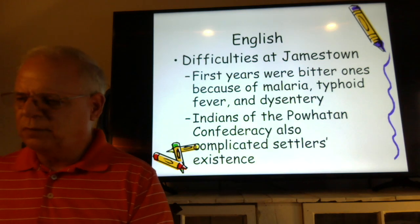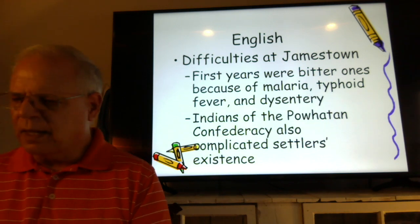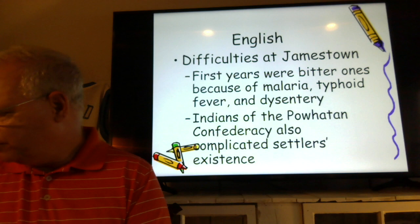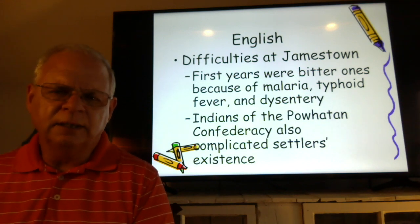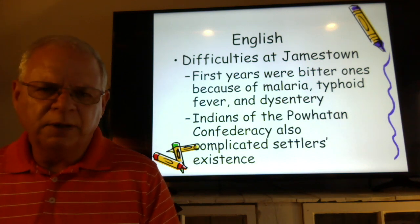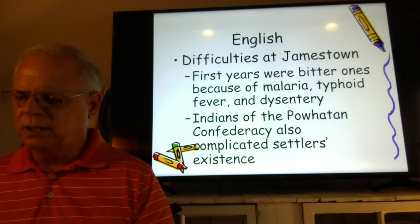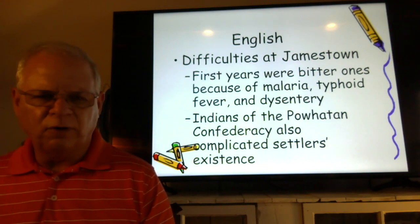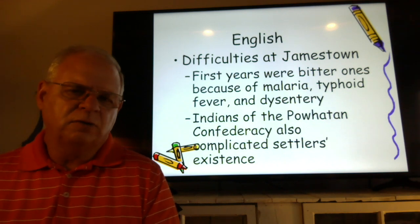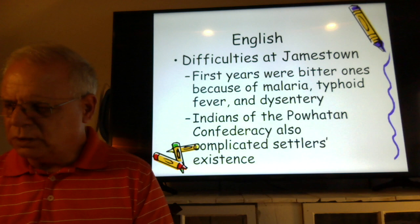These people faced serious difficulties at Jamestown in those early years. The first settlers were bitter because of malaria, typhoid fever, and dysentery. Moving over to page 22, you also see difficulties with the Native Americans of the Powhatan Confederacy that complicated the settlers' existence. These Native American groups were not welcoming to the intrusion on their land, especially as settlers created farmland and limited areas the Native Americans considered open to them — there were major differences in thinking between the two groups.